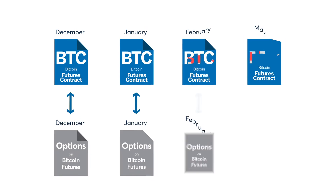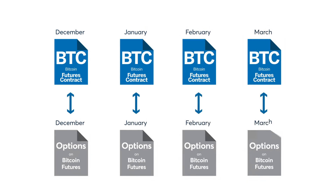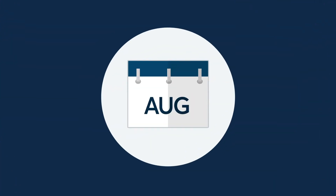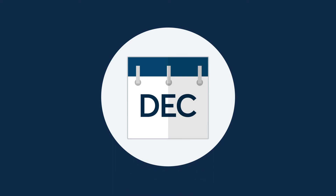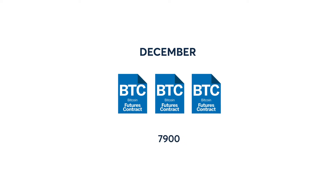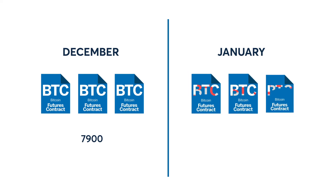Options on Bitcoin futures will mirror the underlying Bitcoin futures listing cycle and will be quoted in U.S. dollars per 1 Bitcoin. Different futures expirations may be trading at different prices. For example, assume the December Bitcoin futures contract is trading at $7,900, whereas the January Bitcoin futures contract is trading at $8,100.